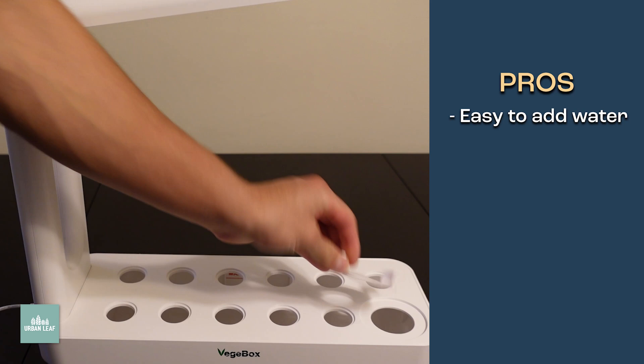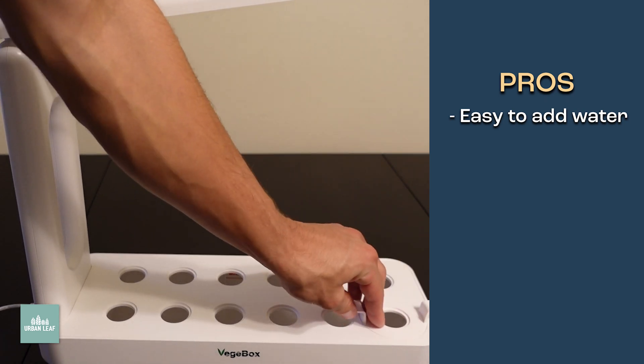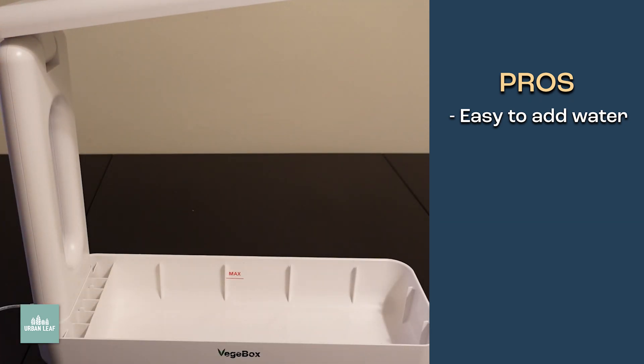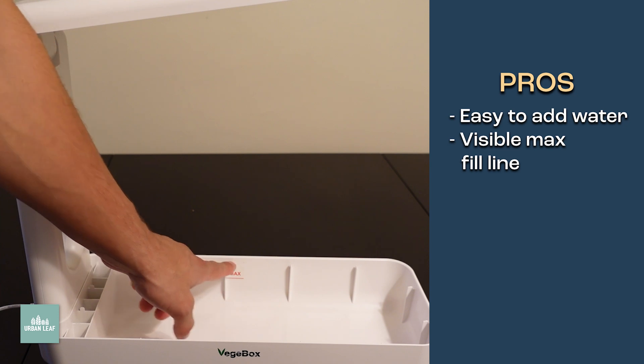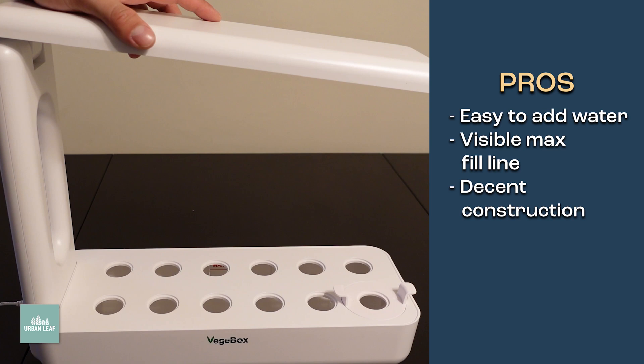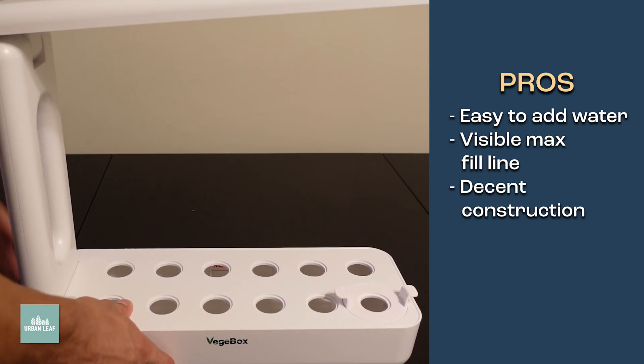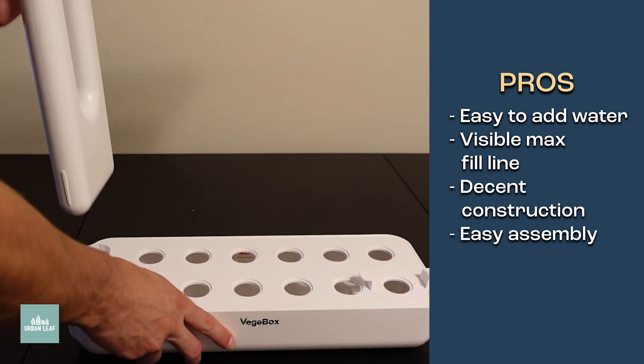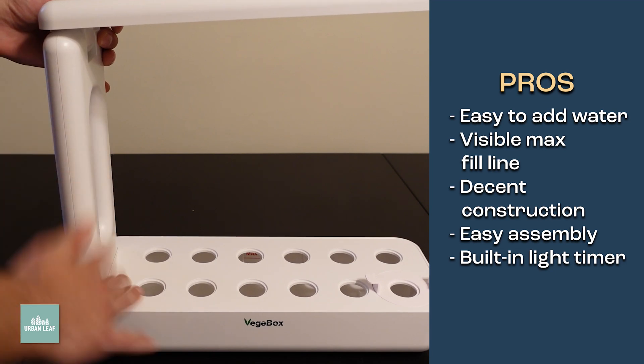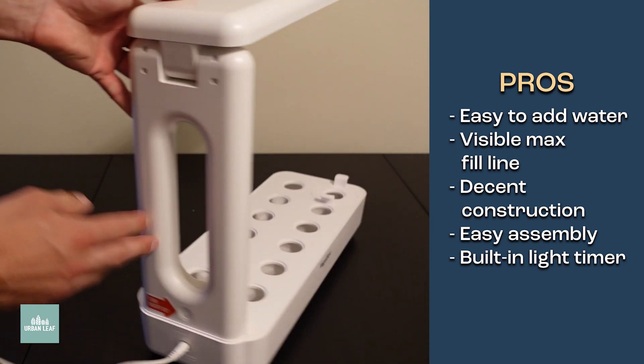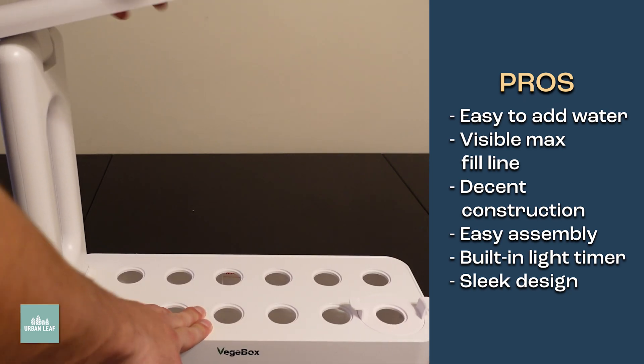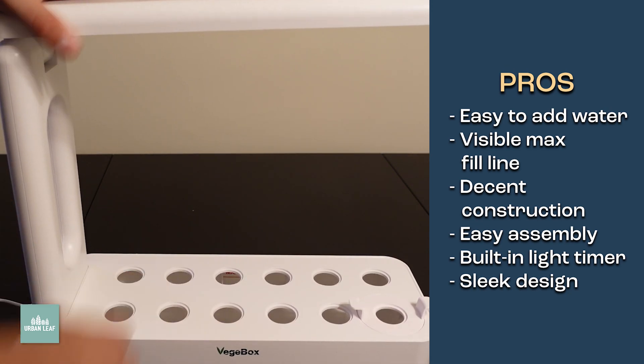So as far as pros go, I like this little water removal thing to make it easier to put water in this thing. There is this max fill line, although I think you're going to want to fill it a tiny bit higher than that. Honestly, I am impressed by the construction of this unit given its price point. I like this simple slide up, slide in light thing. I think the automatic timer is fairly nice. The design is somewhat streamlined. It's fairly sleek for a model of this price range. The light seems alright as well.